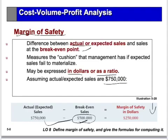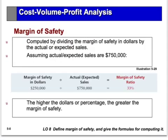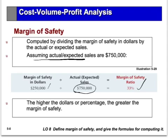Above $500,000, sales generate a profit. The margin of safety can also be expressed as a ratio: $250,000 divided by $750,000 gives a 33% margin of safety ratio. We want to maximize this — the higher the margin of safety, the less risky the company is of falling into an unprofitable year.